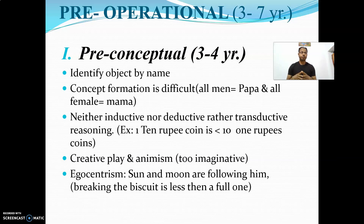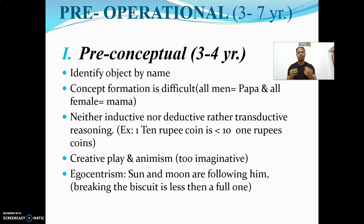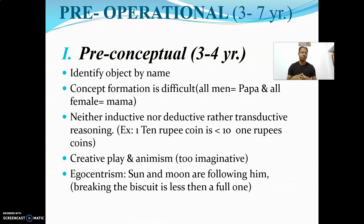In creative play, the child tries to prepare pretend food using leaves, sand, and particles. In animism, the child thinks that every doll has life — that is why the child tries to feed the doll, and if you throw the doll, the child will start to cry. Egocentrism is another characteristic feature — the child believes the sun and moon are following them, and thinks that what they believe is always right.